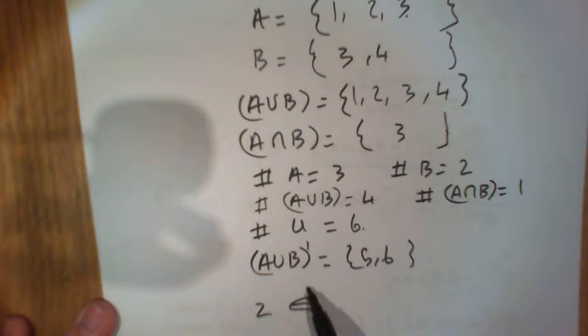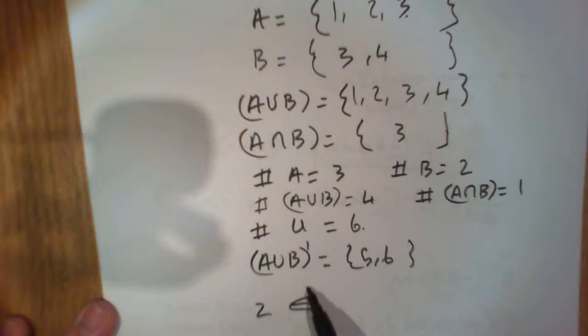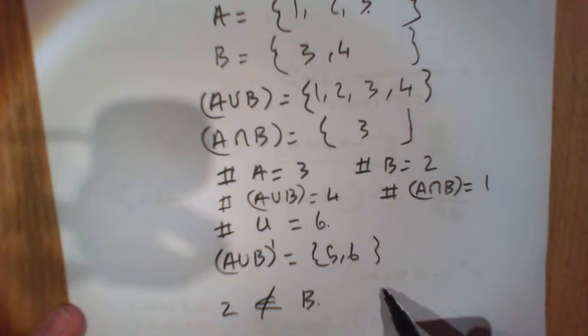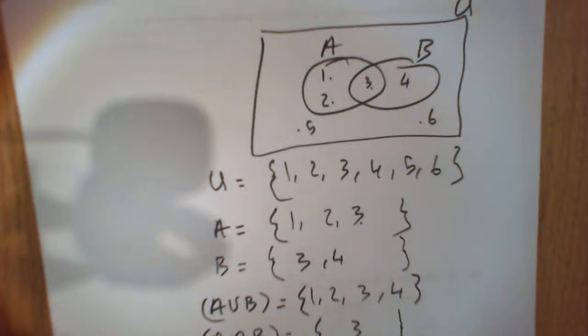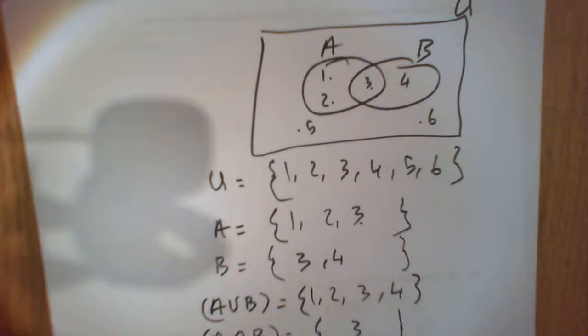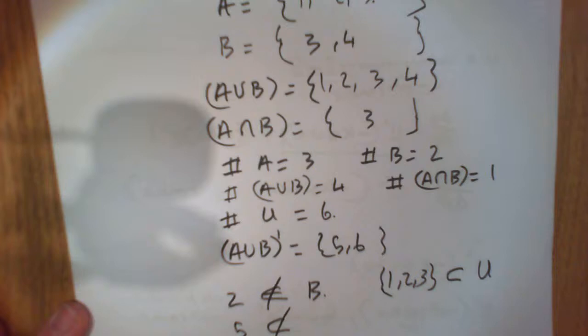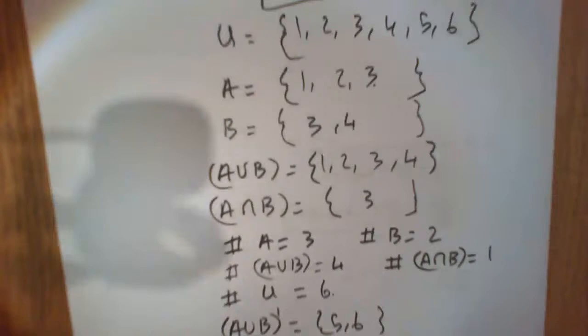Now we've got our little things. So for example, two is not an element of B - that's true, two is not an element of B. One, two, and three are a subset of the universal set, and that is true. Five and six is not a subset of A union B - that's true as well. So there are all the different things that we were learning. We have learned quite a lot.